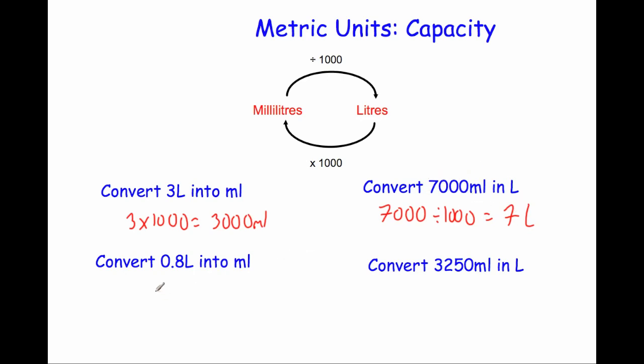Okay our next question. Change 0.8 litres into millilitres. So we're going to times by 1000. So 0.8 times by 1000. That means we're going to move the digits three places to the left. So it's going to become 800. So 800 millilitres. And that's our answer. And that makes sense because one litre is 1000, so 0.8 would be under that, so that's 800 millilitres.